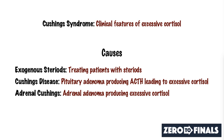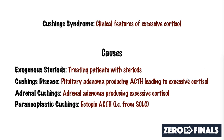The final cause in the big four is paraneoplastic Cushing's. This is where you have a malignancy — a cancer — and you get a disease that occurs para, alongside the cancer. How this works is that a cancer produces excessive amounts of ectopic ACTH, most commonly from a small cell lung cancer, and that excessive ACTH stimulates the adrenal gland to produce excessive amounts of cortisol.